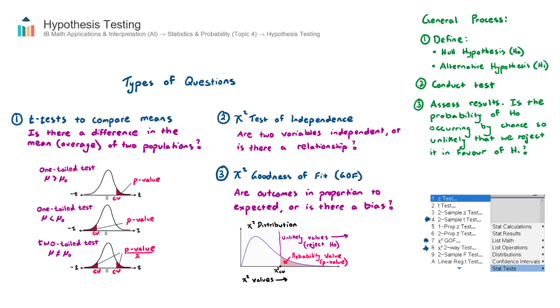So for all three of these tests, we will get what's called a p-value, which stands for a probability. Now what that probability represents, this p-value, and it's a decimal, it's the probability of the null hypothesis occurring by chance. In other words, the probability of the null hypothesis being true.